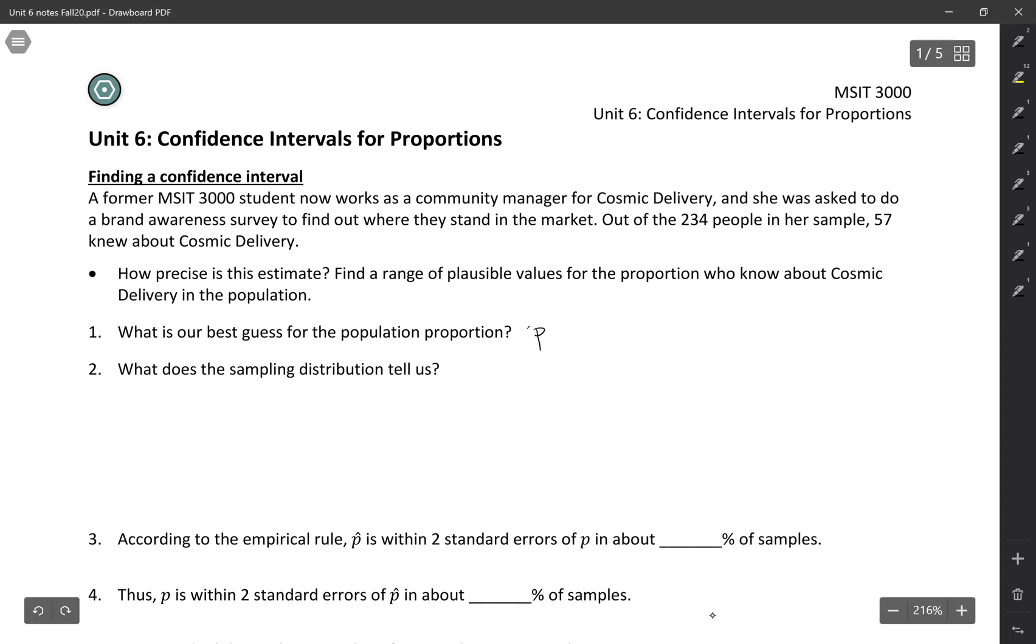So since this is the statistic, this is the number that describes the sample, we're going to use p hat for that. So it's 57 out of 234. And we'll try to get in the habit of keeping four decimal places just to make sure that you always get full credit in WebAssign. And this will be 0.2436.